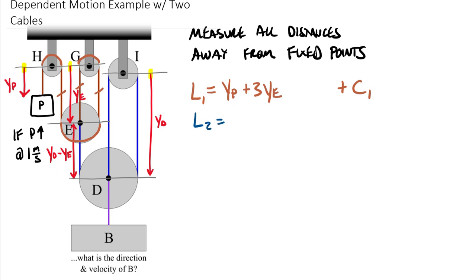So L2, the blue cable, is equal to, we'll start over here on this side, so we have this difference between YD and YE, and we're adding to that 2 times YD, and we're adding our constant, call this C2, which is going to be made up of the distance under the bottom of this one and the distance over the top of I. Once again, just lumping those constant values, because when we take a time derivative of these two equations, all of those non-changing distances will go to zero.